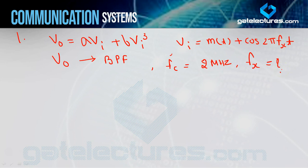Let me repeat the question. A non-linear system is being used whose characteristics are A·VI + B·VI³, to generate a DSBSC signal. VI is given. The output of the non-linear system is passed through a band pass filter, and we need to find the value of FX such that the DSBSC signal carrier frequency is 2 MHz.